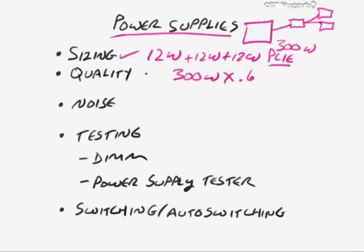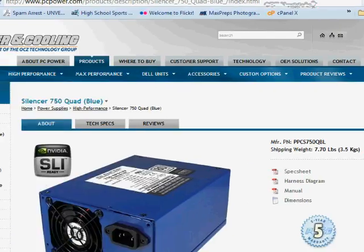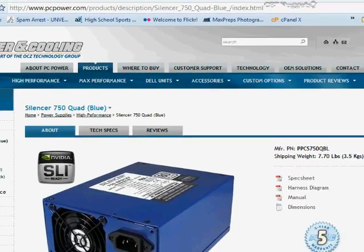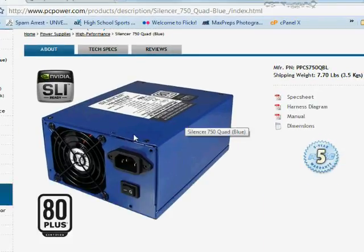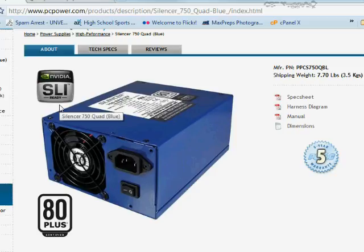You always want to get the best quality power supply you can. The power supply is one thing you probably don't want to skimp on. One company I recommend is PC Power and Cooling — I don't get any kickbacks from them. Looking at one of their power supplies, this particular one is Nvidia SLI-ready, which means it actually has two PCI Express power connectors for your video cards.